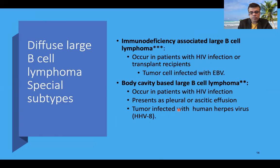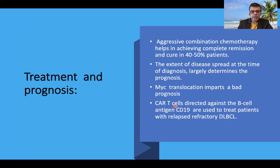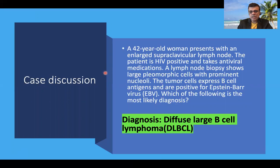For treatment and prognosis, aggressive combination chemotherapy helps in achieving complete remission and cure in many patients. Extent of disease spread at the time of diagnosis is the most important prognostic factor. MYC translocation overall imparts a bad prognosis. For relapsed or refractory DLBCL, chimeric antigen receptor T cells — CAR-T cells, lab-modified T cells directed against B cells containing the CD19 antigen — are being used. Anti-CD20 monoclonal antibodies are also available for specific targeting.